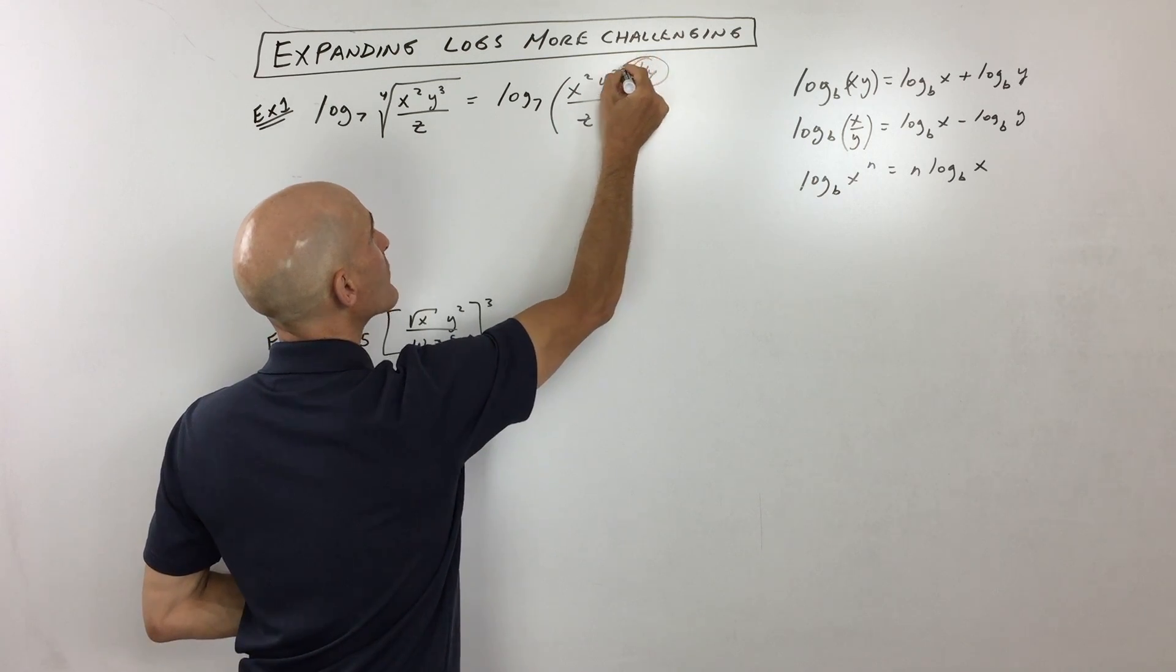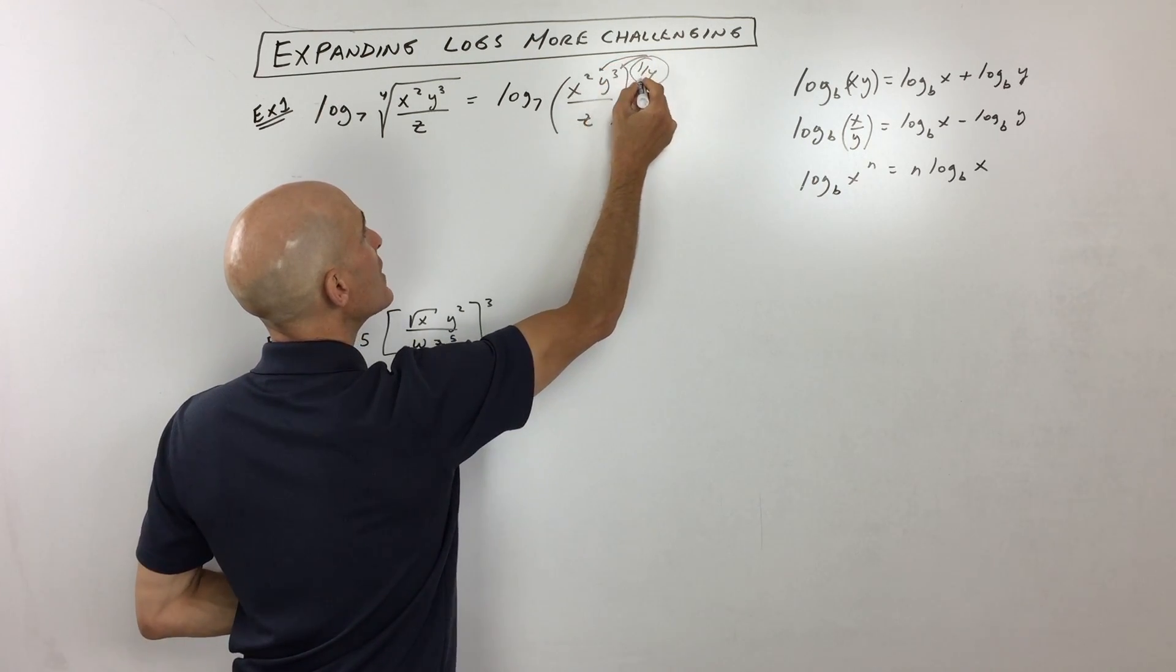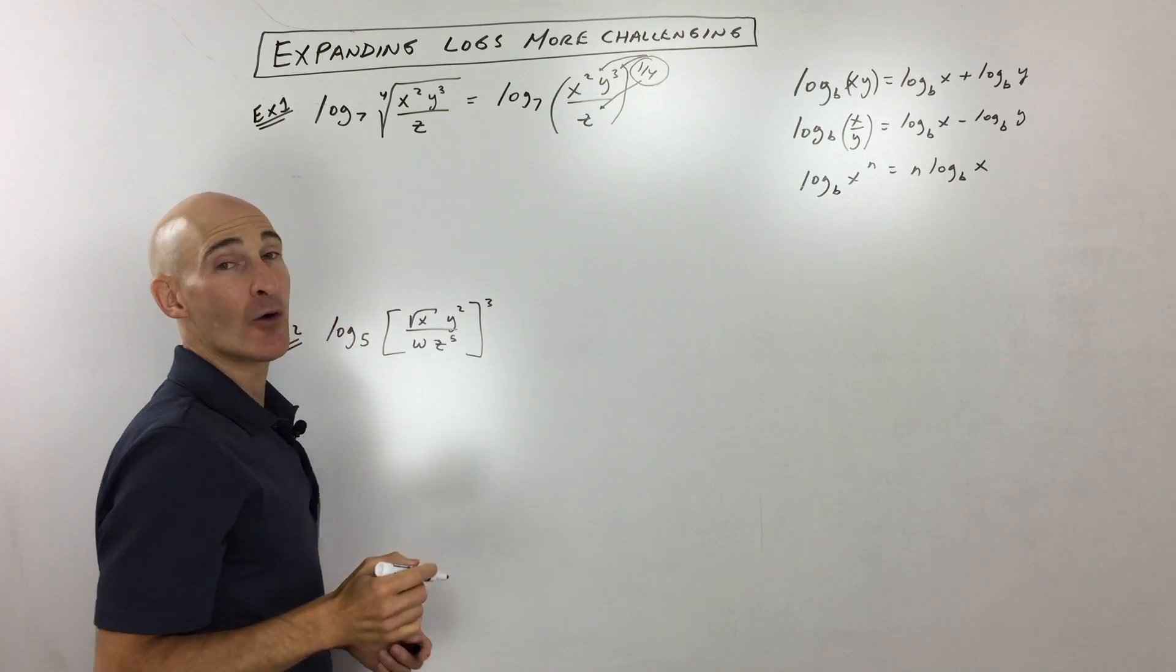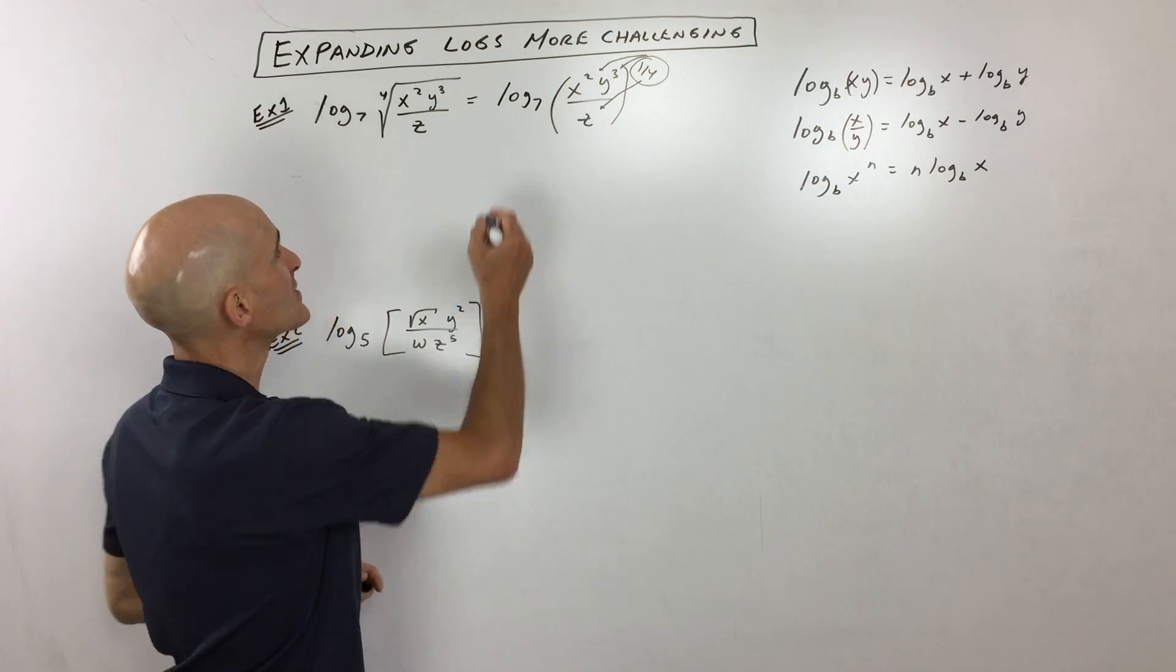Now when you have a power to a power, you remember this from when you learned about exponents, you can distribute that power into the parentheses. So power to power, you multiply the exponents.